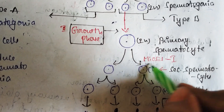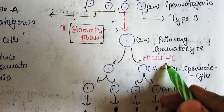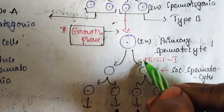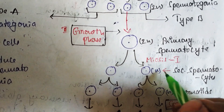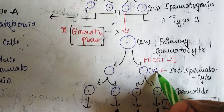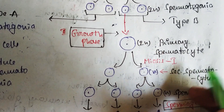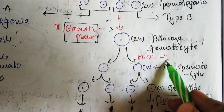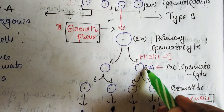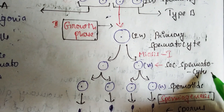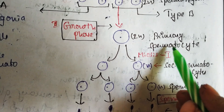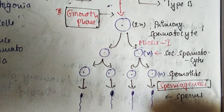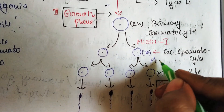Primary spermatocytes then undergo meiosis division 1. Meiosis 1 reduces the chromosome number, producing two haploid daughter cells with a single set of chromosomes — these are called secondary spermatocytes. After meiosis 1, these haploid secondary spermatocytes are formed.